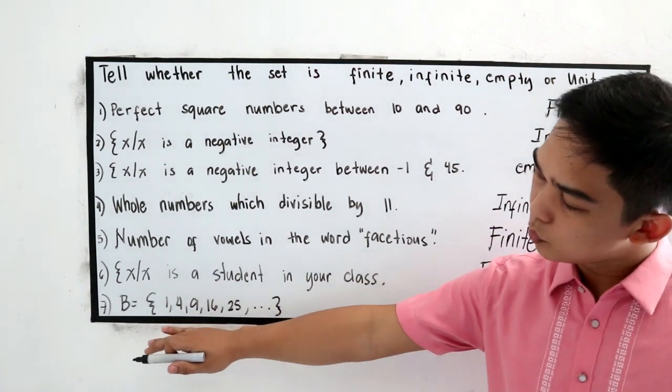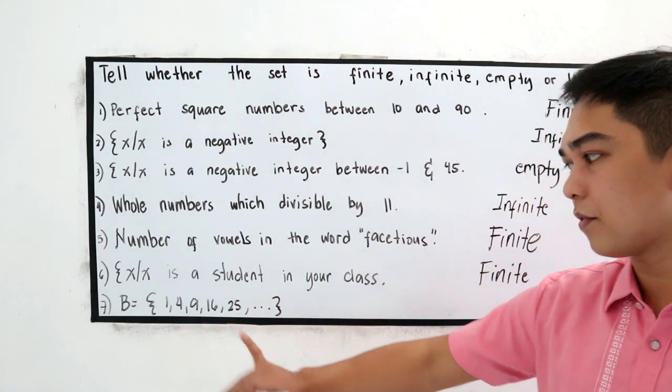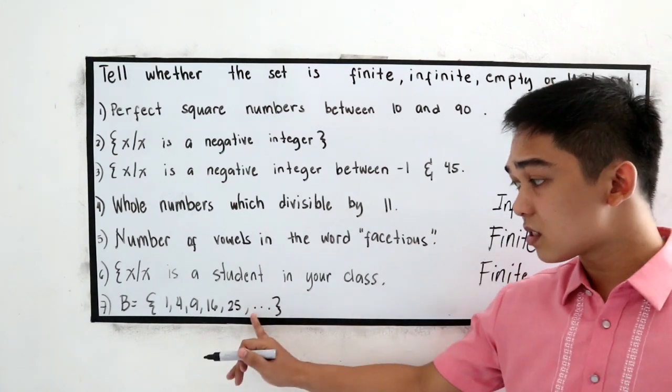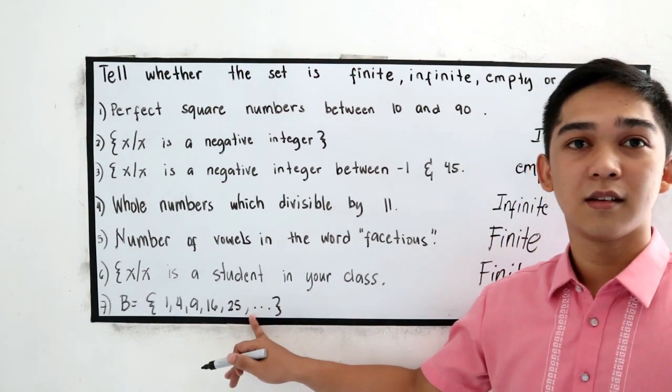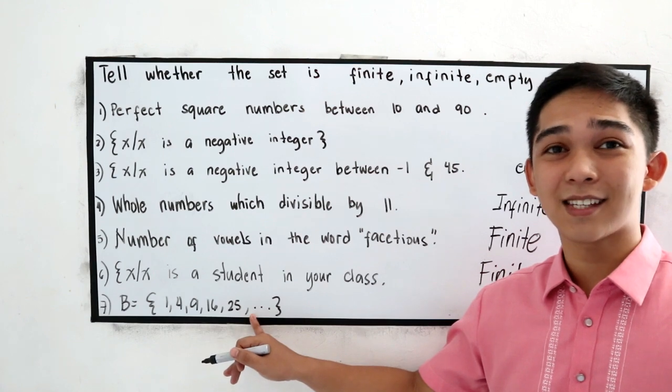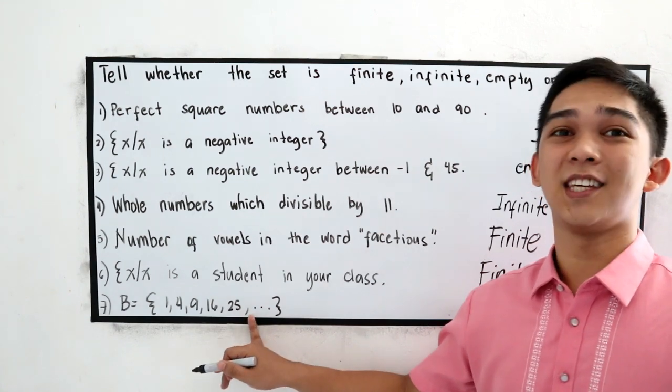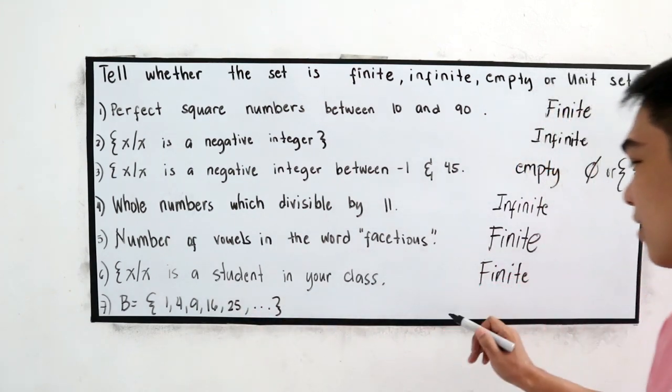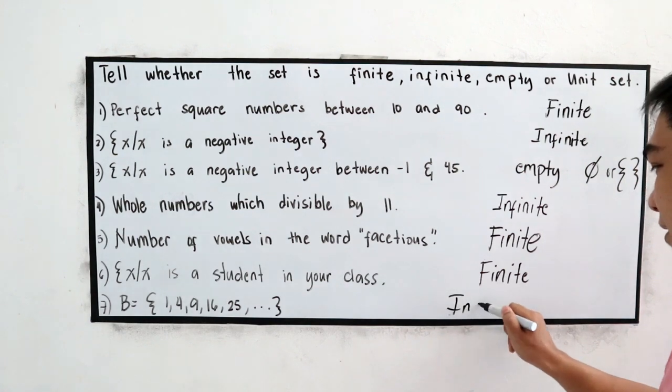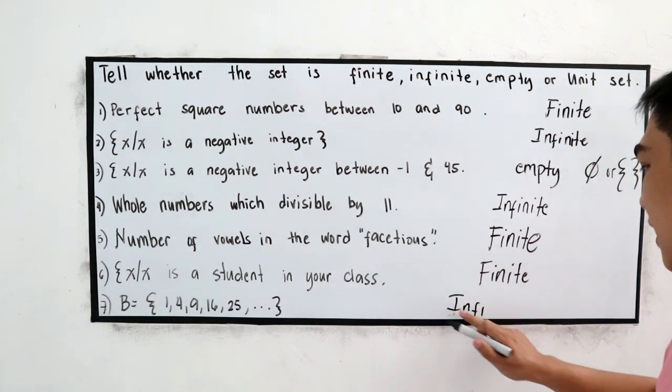B is equal to 1, 4, 9, 16, 25, and so on. This is the ellipsis sign. The ellipsis sign indicates infinity. So, this is infinite.